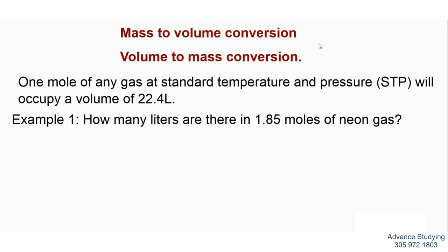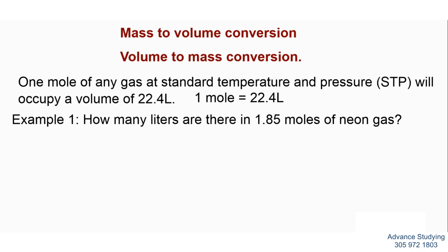Today we look at mass-to-volume conversion and volume-to-mass conversion. To go from mass to volume I need to go through moles, and to go from volume to mass I still need to go through moles — so moles is my middle factor. Avogadro says that one mole of any gas at standard temperature and pressure will occupy 22.4 liters. So for every one mole of any gas, that equals 22.4 liters.